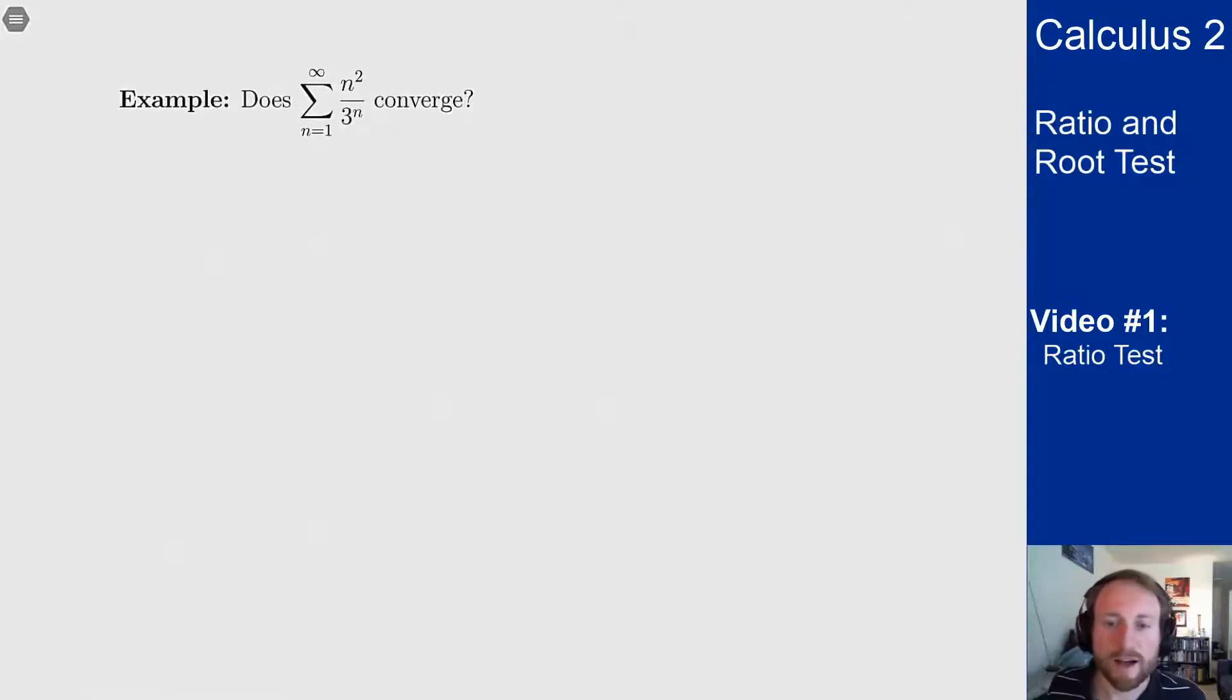So here's one example of how you can use this. We want to look at the example of does the series from 1 to infinity of n² over 3^n converge. So since we see this 3^n here as well as a polynomial on top, we'll see later why but that's going to lead us to try to use the ratio test for this series.